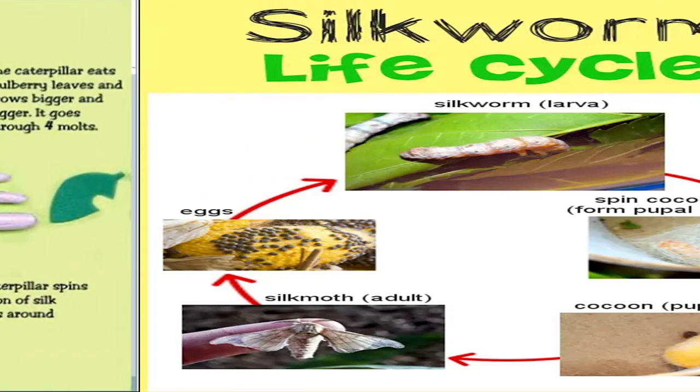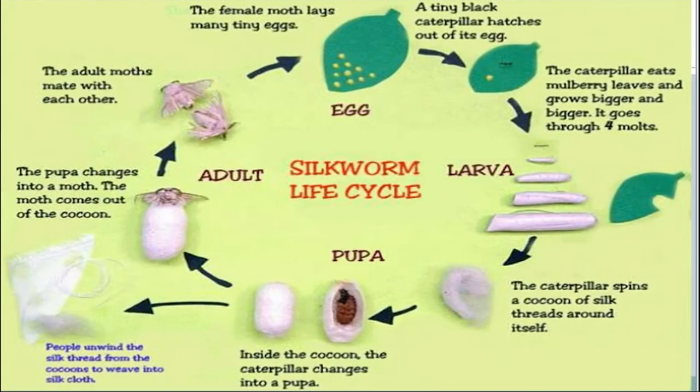First, the female moth lays many tiny eggs. The tiny black eggs hatch into the caterpillar. The caterpillar eats mulberry leaves and grows bigger and bigger. It undergoes four molts, then it forms a larva stage.